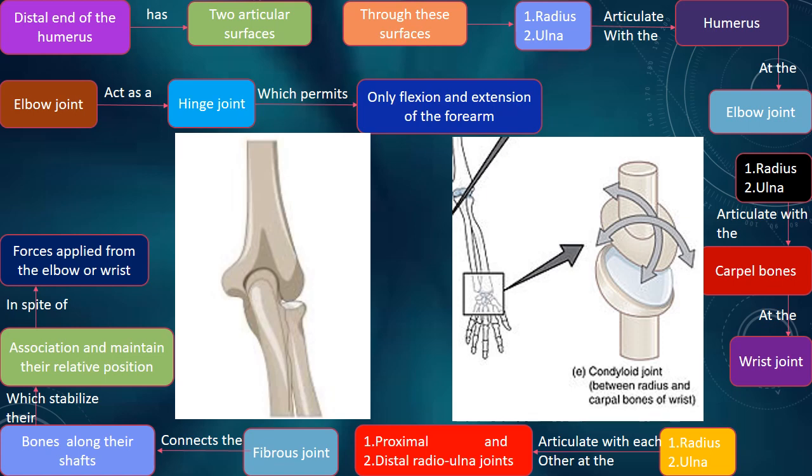Through these surfaces, the radius and ulna articulate with the humerus at the elbow joint.